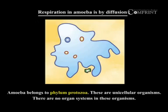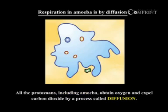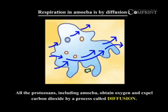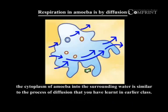Respiration in amoeba is by diffusion. Amoeba belongs to the phylum Protozoa. These are unicellular organisms. There are no organ systems in this organism. All the protozoans, including amoeba, obtain oxygen and expel carbon dioxide by a process called diffusion.